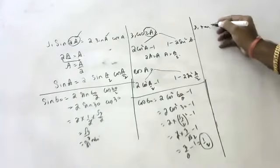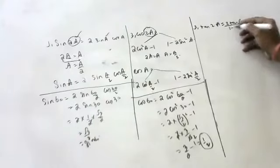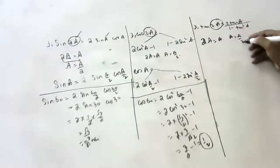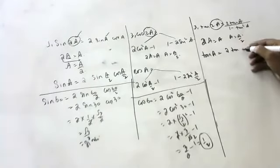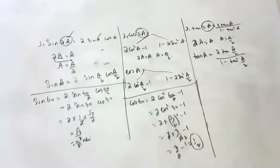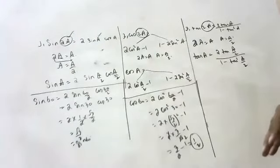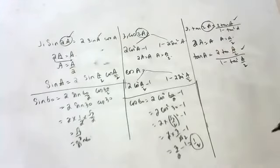In the last class we also studied tan 2a. Does anyone remember the tan 2a formula? It is 2 tan a / (1 − tan²a). I will apply the same substitution here: if 2a becomes a, then a becomes a/2. So tan a = 2 tan(a/2) / (1 − tan²(a/2)). All these formulas should be on your fingertips. Only if these formulas are memorized will you be able to do the numericals. Many problems will come using these formulas every day.